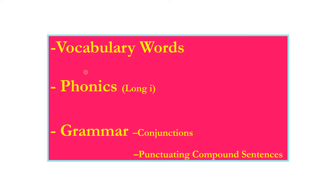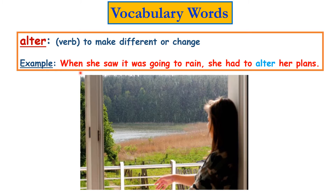We'll start with our new vocabulary. The first word is alter. It's a verb, an action. Here in the picture, this girl was watching the weather and it seems like it's raining. When she saw it was going to rain, she had to alter her plans. She couldn't stick to her plans or go out and enjoy her time outside. Alter means to make different or change.